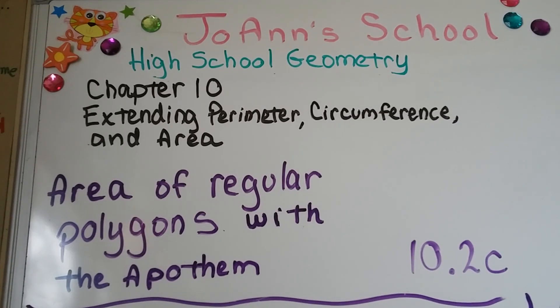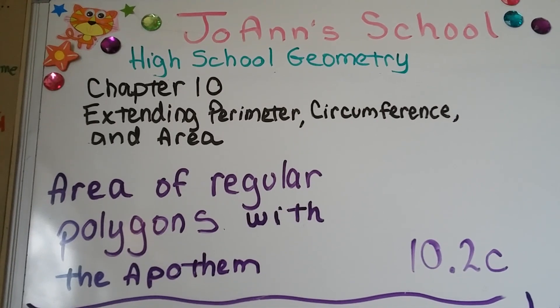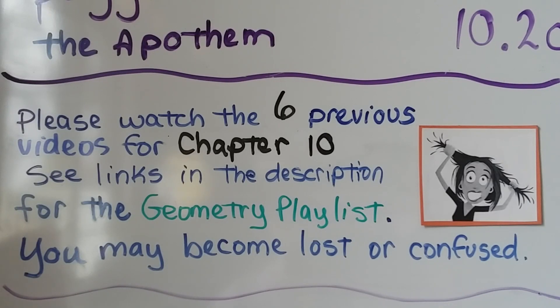Area of regular polygons with the apothem. We're at 10.2c. There are six previous videos for chapter 10 that you can find by clicking on the description.